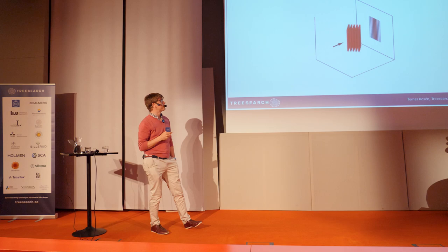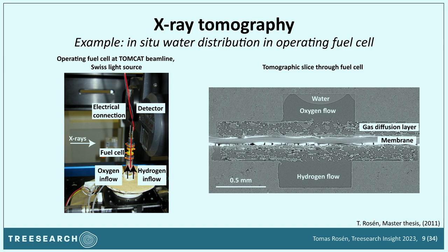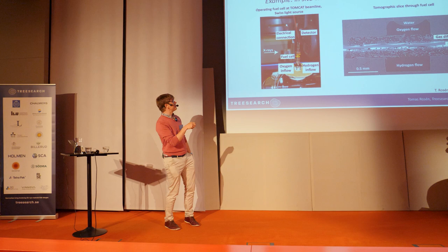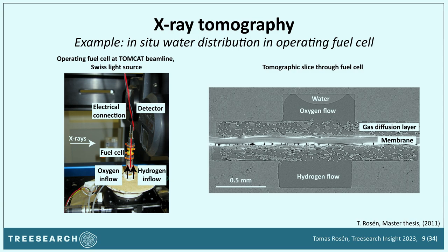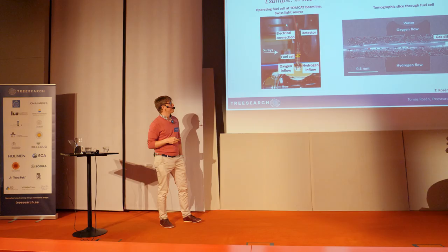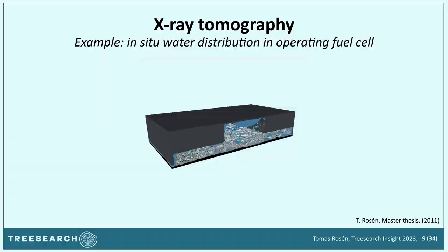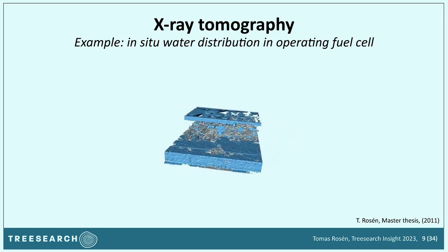I'll show some examples from my own work. As a master's student, I was doing this in Switzerland 12 years ago, placing an operating hydrogen fuel cell at the Tomcat beamline at the Swiss Light Source. We combined hydrogen and oxygen into water and electricity while simultaneously doing tomography. We could directly see how water was created and located within the carbon fiber network inside the fuel cell — studying how it affected the gas diffusion layer properties. You can label various voxels in the tomogram.